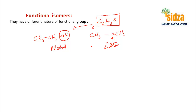This one is an alcohol and this one is an ether, so these are functional isomers. Compounds having the same molecular formula but different functional groups are called functional isomers. Since it is the functional group that gives most of the properties to a compound, these functional isomers will have different physical and chemical properties.